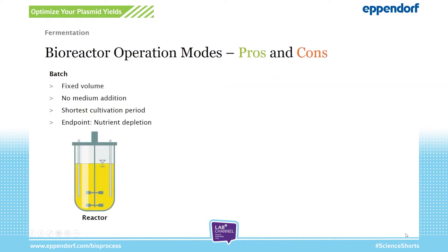There are three common cultivation modes used to let your culture grow. The first one is called the batch fermentation mode. It is relatively simple: you open the bioreactor, add your inoculum to the medium inside, close it, set your bioprocess conditions, and let your bacteria grow. The bacteria will then deplete the nutrients in the medium, and once depleted, this marks the endpoint of your experiment. No medium is added during this process, enabling the shortest cultivation period of the different modes.